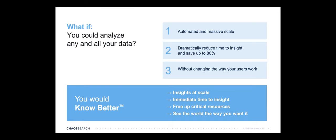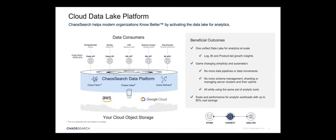Continuing to think about modern architectural solutions that will help organizations get access to more data in a cost-effective way is something we've spent a lot of time considering at ChaosSearch. If you think about the challenge of getting to any and all of your data — site traffic, user data, billing detail, and customer interaction — without a lot of data moving and pipelining: what would you really want? Automated data access at massive scale, dramatically reduced time to insight, and savings of up to 80% on your analytic infrastructure investments, without changing the way your users work.